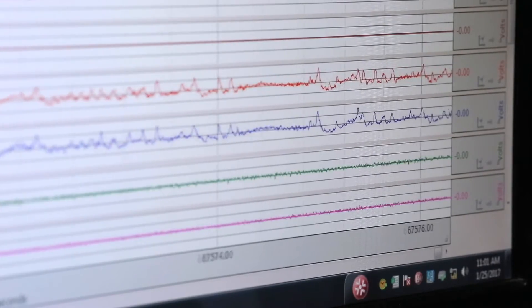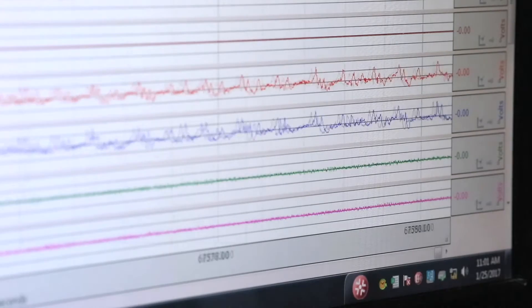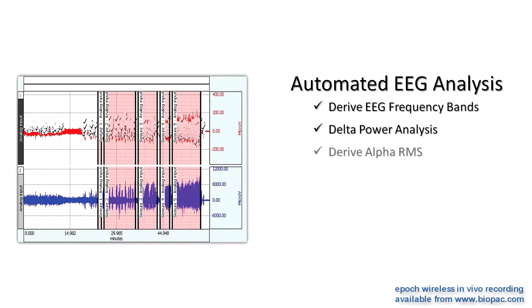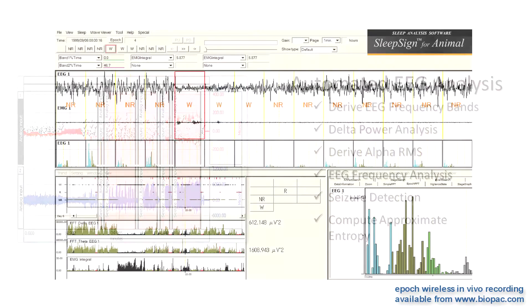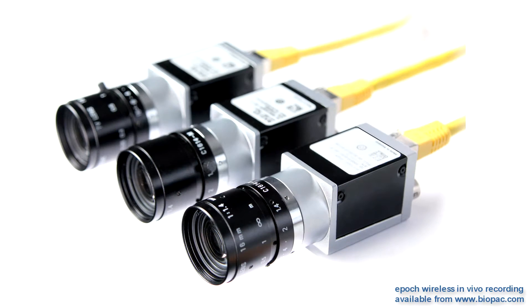After recording, automated EEG analysis routines quickly score multiple channels of EEG data simultaneously. Acknowledge guided automated routines can be used to derive frequency bands, complete a frequency analysis, look at alpha-RMS, and more. EPIC and Biopac also easily integrate with sleep analysis software and video monitoring.